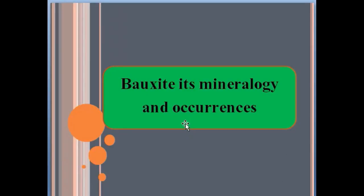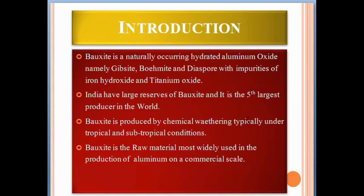Today we talk about bauxite, its mineralogy and occurrences. Bauxite is a naturally occurring hydrated aluminum oxide, namely gibbsite, boehmite, and diaspore, with impurities of iron hydroxide and titanium oxide. India has large reserves of bauxite.